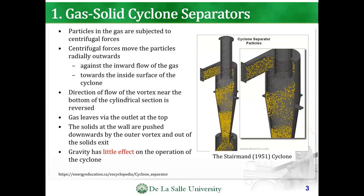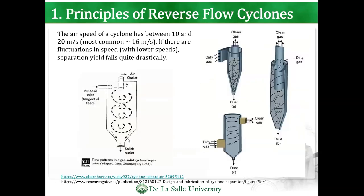The direction of flow of the vortex near the bottom cylindrical section is reversed. The gas enters here and leaves on top. In cyclones, gravity has little effect on the operation.